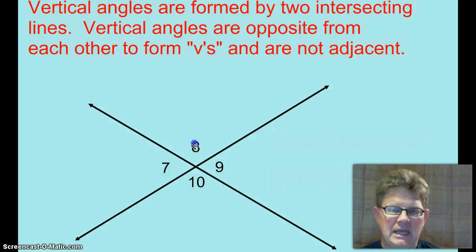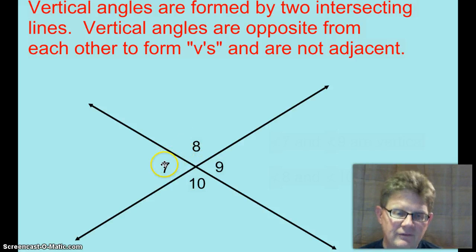So, angle 8 and angle 10, they're vertical angles from each other. It's not like they're next door to each other like 8 and 9. 8 and 9 are a linear pair. 8 and 7 are a linear pair. 8 and 10, vertical. That would also make 7 and 9 vertical angles.